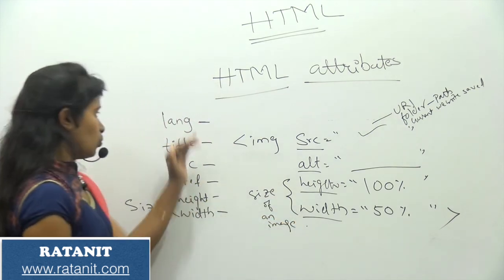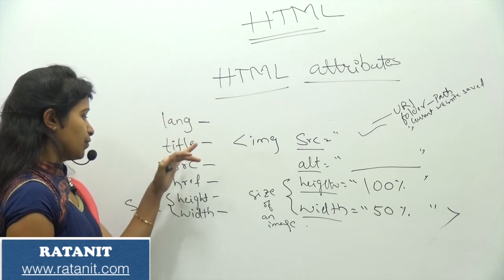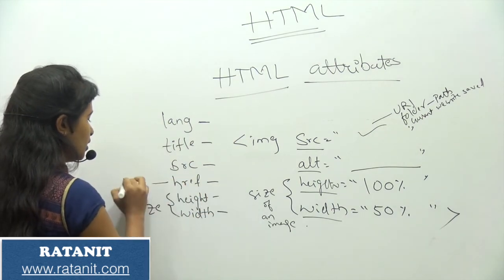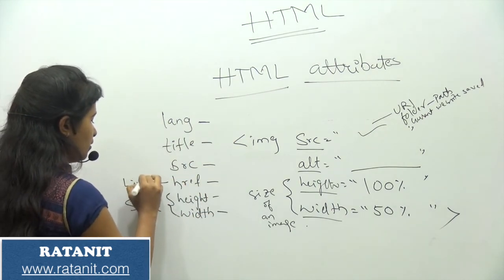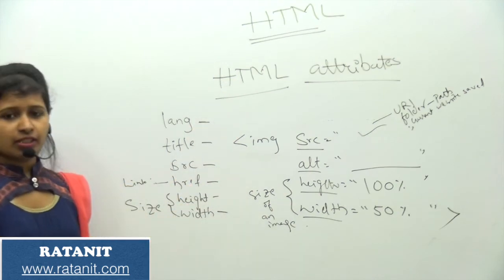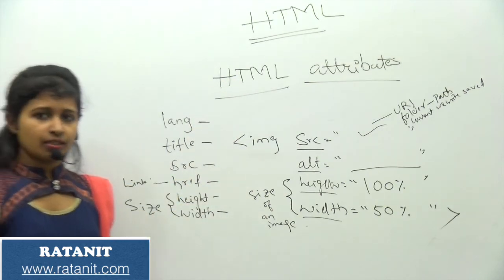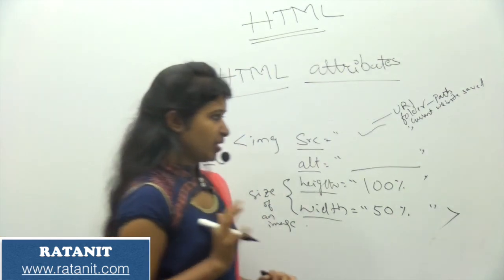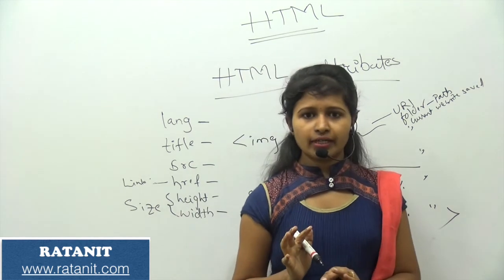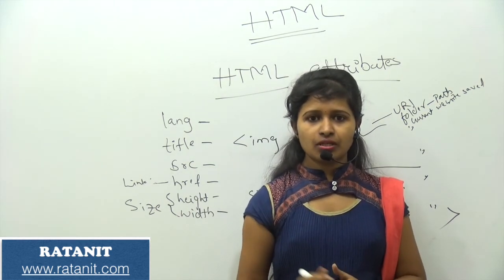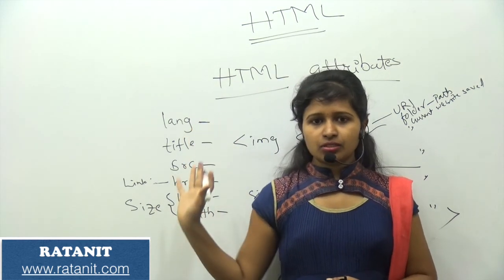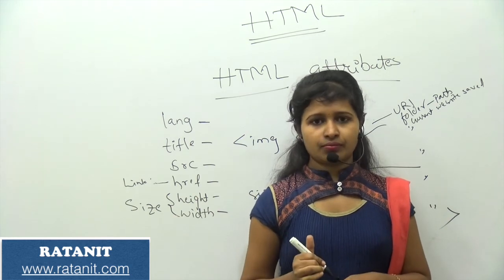This is all about the language, title, source, and href attributes — href we use in links. Now we are clear about what HTML attributes are. There are so many attributes; with these basic ones I am giving you a clear overview, and as we go deeper into HTML we will discuss more attributes.